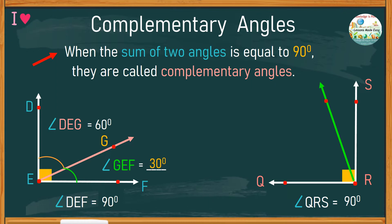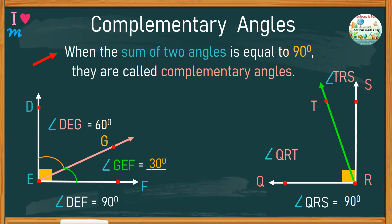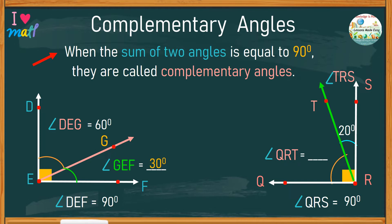Let's have side RT. Now we have angle QRT as the complement of angle TRS. If the angle TRS is 20 degrees, what would be the size of angle QRT? Well, if together they make 90 degrees, subtracted by 20, therefore the remaining angle QRT is 70 degrees.